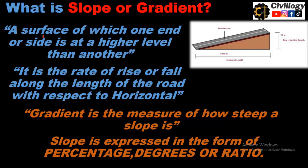Slope is a surface of which one end or side is at higher level than another. As you can see over here, this place is at lower level and this place, or you can say this point, is at higher level. So the line joining these two points is called a slope or gradient.